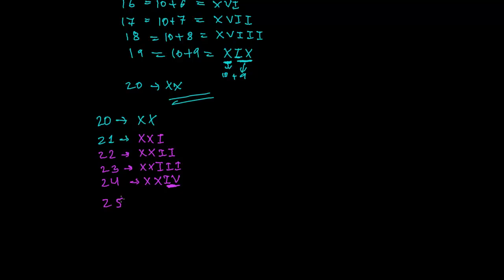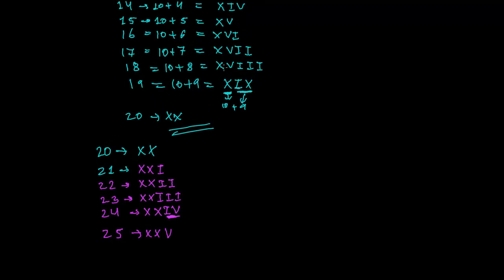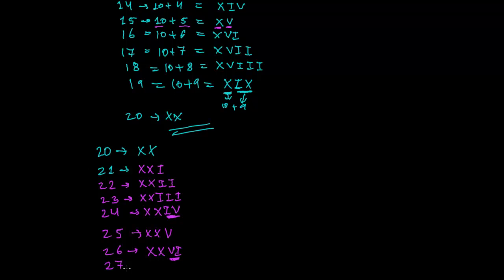For 25, we write 20 plus 5 — XX and V — giving XXV, just as we did for 15. For 26, it's 20 plus 6: XXVI. For 27, it's 20 plus 7: XXVII. For 28, it's 20 plus 8: XXVIII.